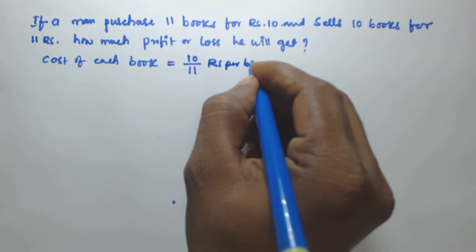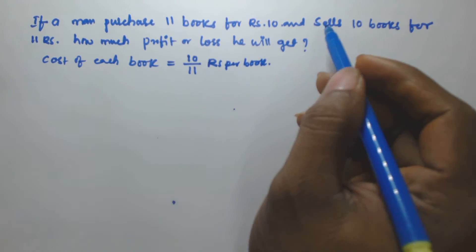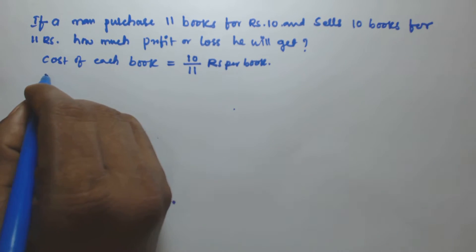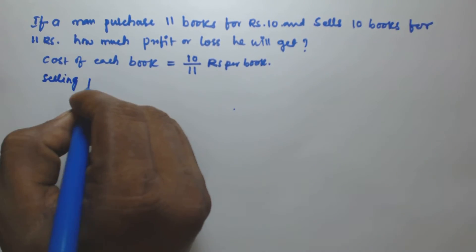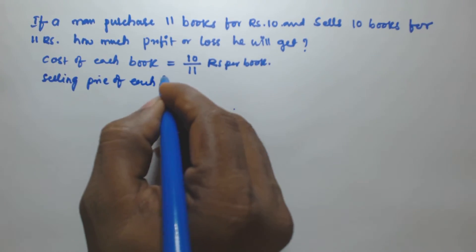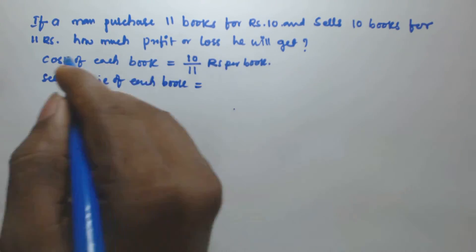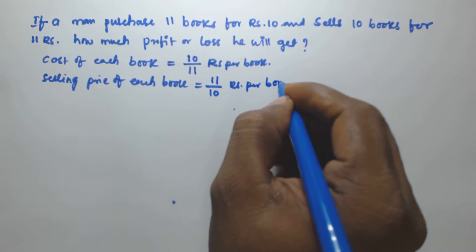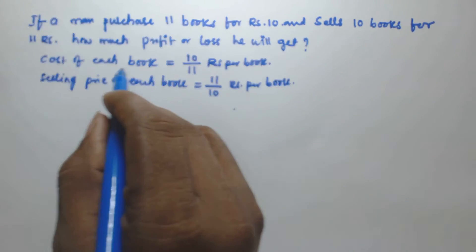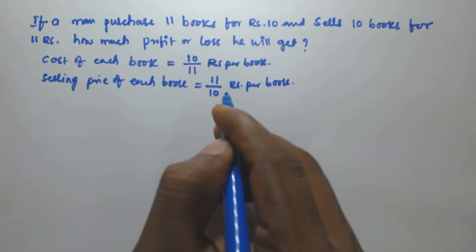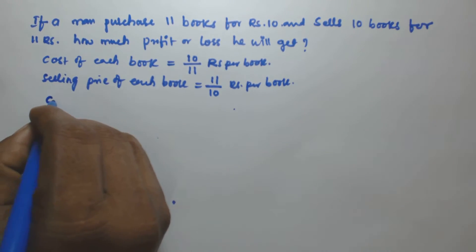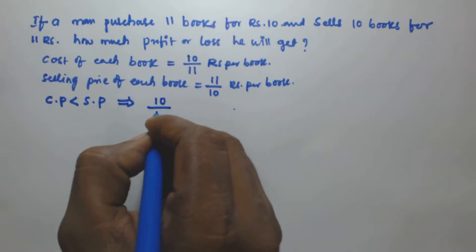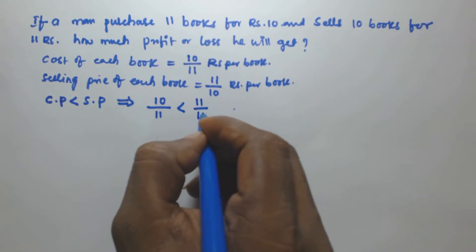And then he is selling 10 books for 11 rupees. So that means the selling price of each book is equal to 11 by 10 rupees per book. So the cost price of each book is 10/11 and the selling price of each book is 11/10. If you observe here, the cost price is less than the selling price, that is 10/11 is less than 11/10.